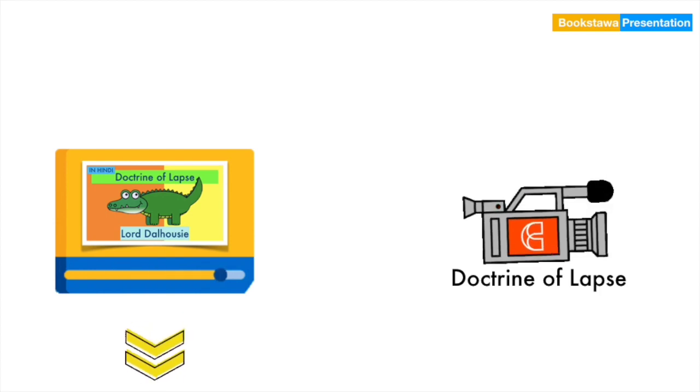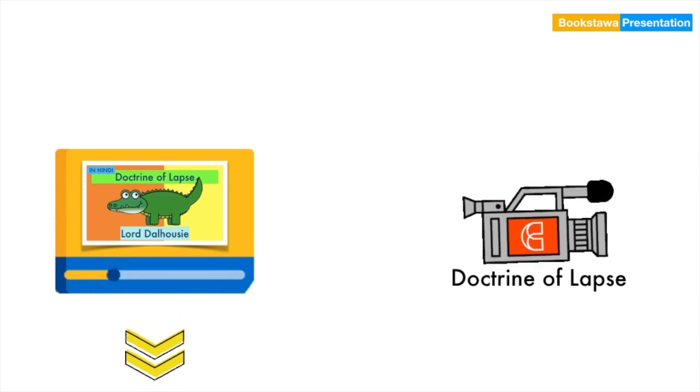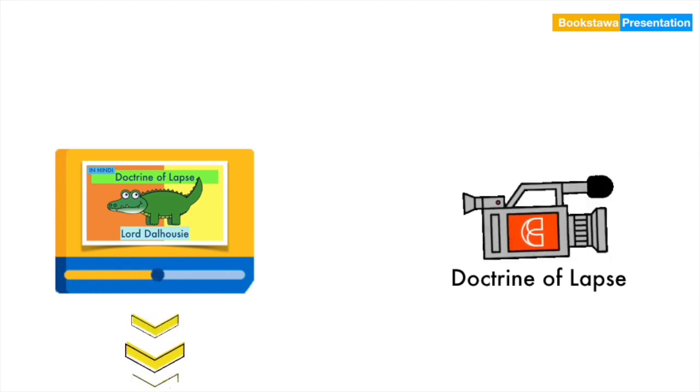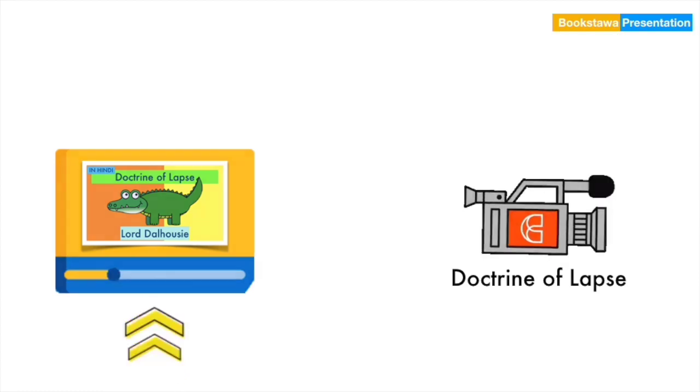The kings of dependent and protectorate states were not allowed to adopt children in Doctrine of Lapse. And in this situation, if the king does not have any child, then that state was annexed. On this topic, we have already uploaded a video. To know in detail, you can watch this video. You will find the link in the description.